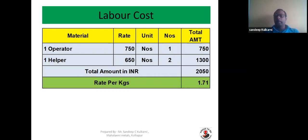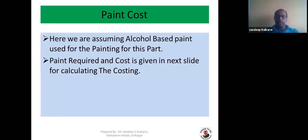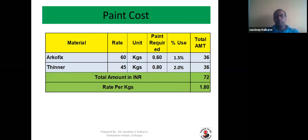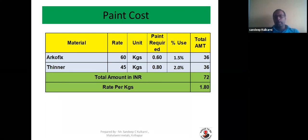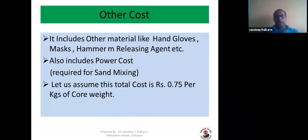For paint cost, we are assuming alcohol-based paint is used for the painting of this part. Alcohol consumption is around 1.5% of core weight and thinner will be around 2% of core weight. The total cost will be around 72 rupees. With the core weight of 40 kg, the painting cost will be around 1 rupee 80 paisa per kg of core weight.